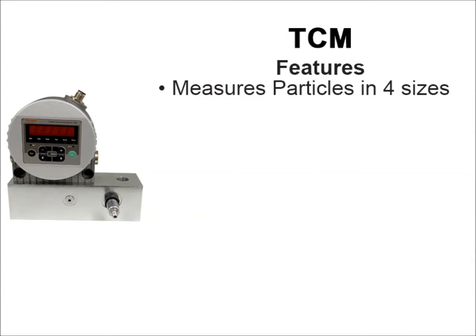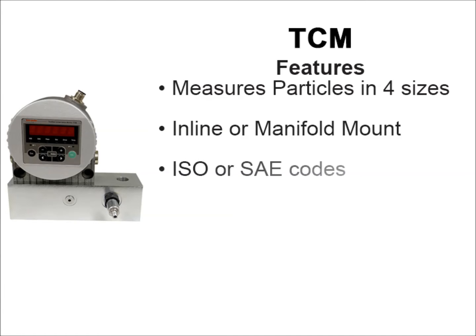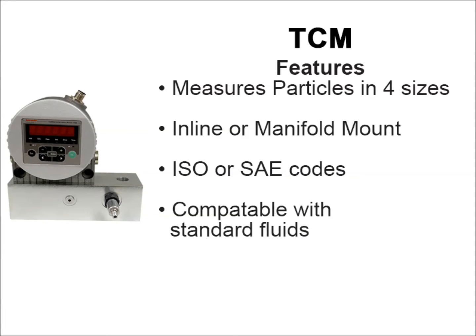The TCM measures particles in four sizes: 4, 6, 14, and 21 microns. The unit can also be used in-line or in a manifold monitor if need be. It also measures ISO and SAE codes and gives you a 4 to 20 milliamp analog signal. It's compatible with standard mineral oils and phosphate esters.